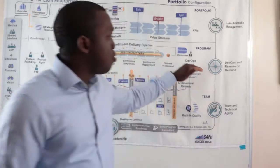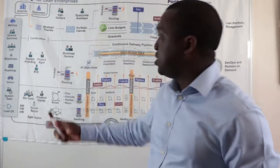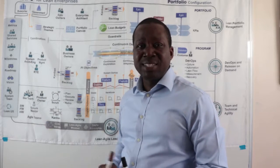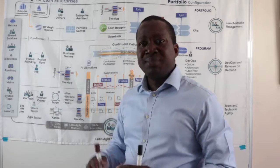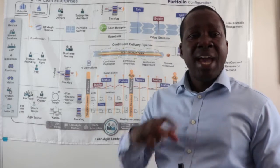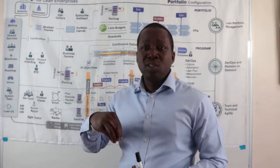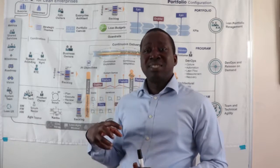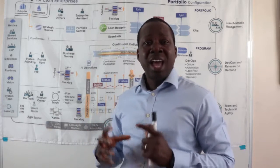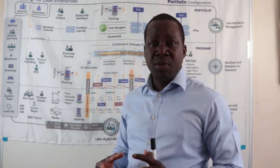In the program layer, we've got the Release Training Engineer, the Systems Architect, and the product management team. The product management team is led by the product manager and includes the business owners, the product owners and other supporting team members that help make sure that our features are ready for the next program increment.